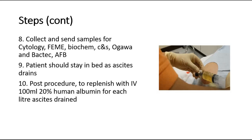Collect some of the fluid for samples to send for cytology, microscopic examination, biochemistry, culture and sensitivity, and other tests. Make sure the patient rests in bed as the ascites is drained. After the procedure, replenish with IV 100 ml of 20% human albumin for each litre of ascites drained. This is to prevent severe hypovolemia secondary to reaccumulation of ascites.